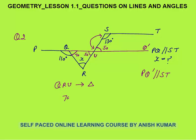So 70 plus 50 plus X equals 180 degrees, therefore X equals 60 degrees. Your angle X is 60 degrees.